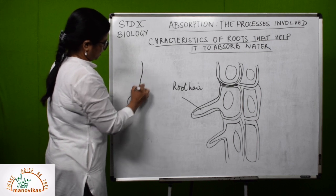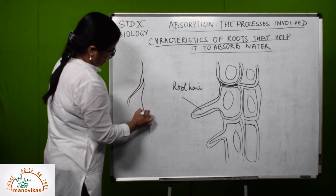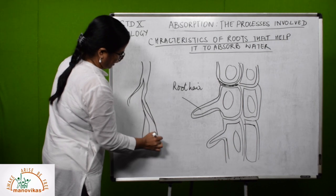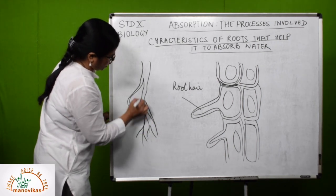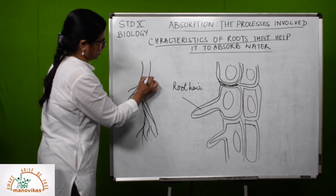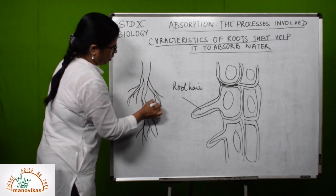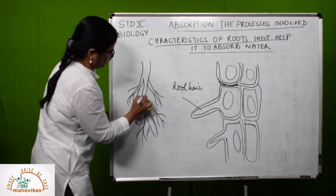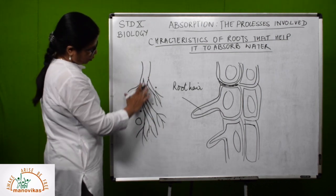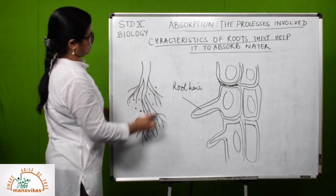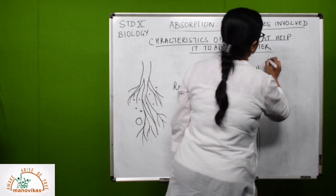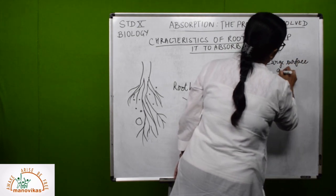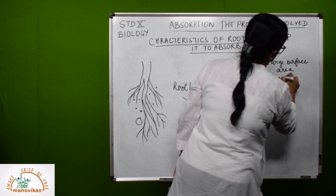The branching nature of roots is the first key characteristic. If you look at the roots, they are highly branched. Because of this branching nature, they increase their surface area — if it was just a single long structure it would not have reached out. There are soil particles and water in the middle of the soil everywhere, so because of its huge branching nature, the root has a large surface area.